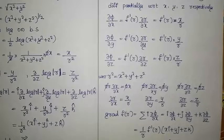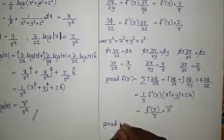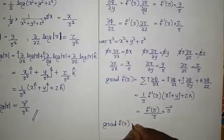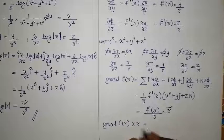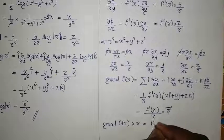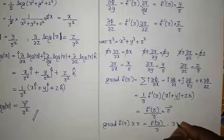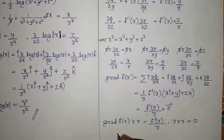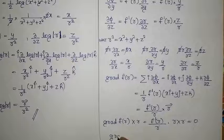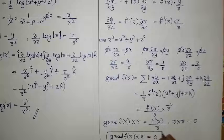Now, gradient of f(r) cross r: substituting, this gives (f'(r)/r) · (r × r). But r × r equals zero by the cross product property. Therefore, gradient of f(r) cross r equals zero.